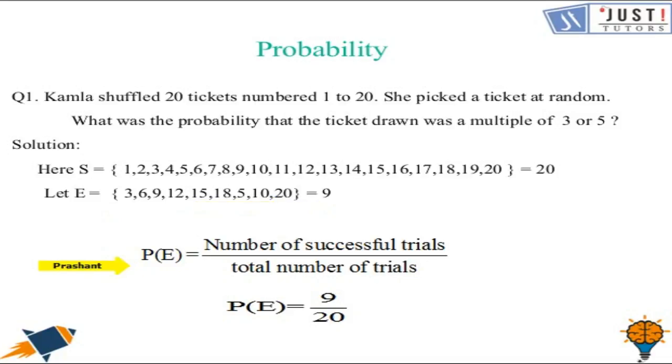Now we have to find the probability. Just as we discussed earlier, the formula is number of successful trials over total number of trials - 9 over 20. So our probability is 9 over 20. We can simplify this as well, but here it is only 9 over 20.